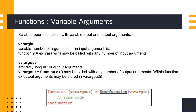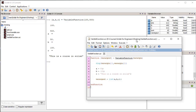Sometimes we may not know the number of arguments to be passed in advance to a function. In that situation we can pass comma-separated values as arguments to that function. The length of the argument list varies as per the calling program. In the same manner we can get a variable number of output arguments from a function. To define a function accepting or returning variable number of arguments, the function signature should have 'varargin' as input argument and 'varargout' as output argument.